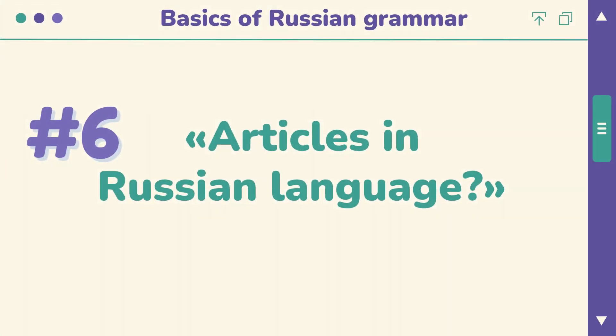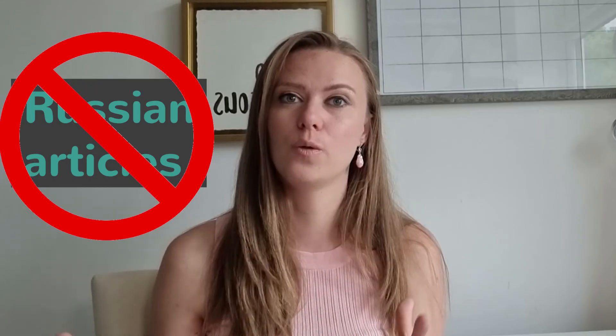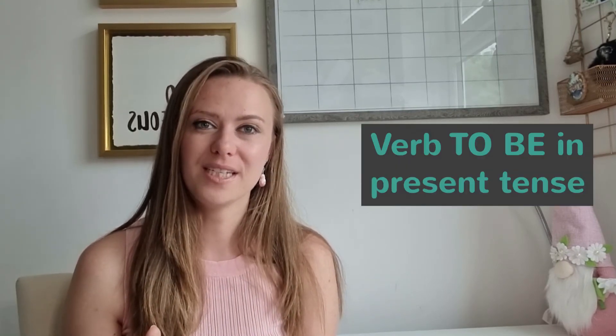Let's continue with the next category: whether there are definite or indefinite articles in Russian. Good news — there are no articles in Russian. If I want to say 'there is a house', I simply say 'там дом' — just two words conveying the same information. Also, the verb 'to be' in present tense is not used — it exists in a sense, but we simply don't say it.